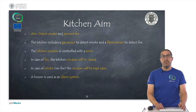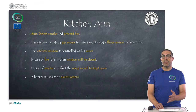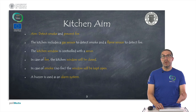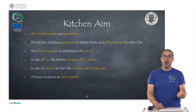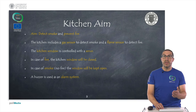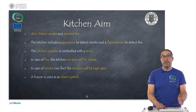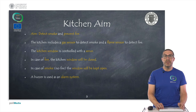The aim of the kitchen is to detect smoke and also to prevent fire. The kitchen includes a gas sensor to detect smoke and a flame sensor to detect the presence of fire and heat. The kitchen window is controlled with a servo so we can open or close it in case of fire or smoke. In case of fire we will close the window, while in case of smoke with no fire we will keep it open. We also use a buzzer as an alarm system to warn the user.